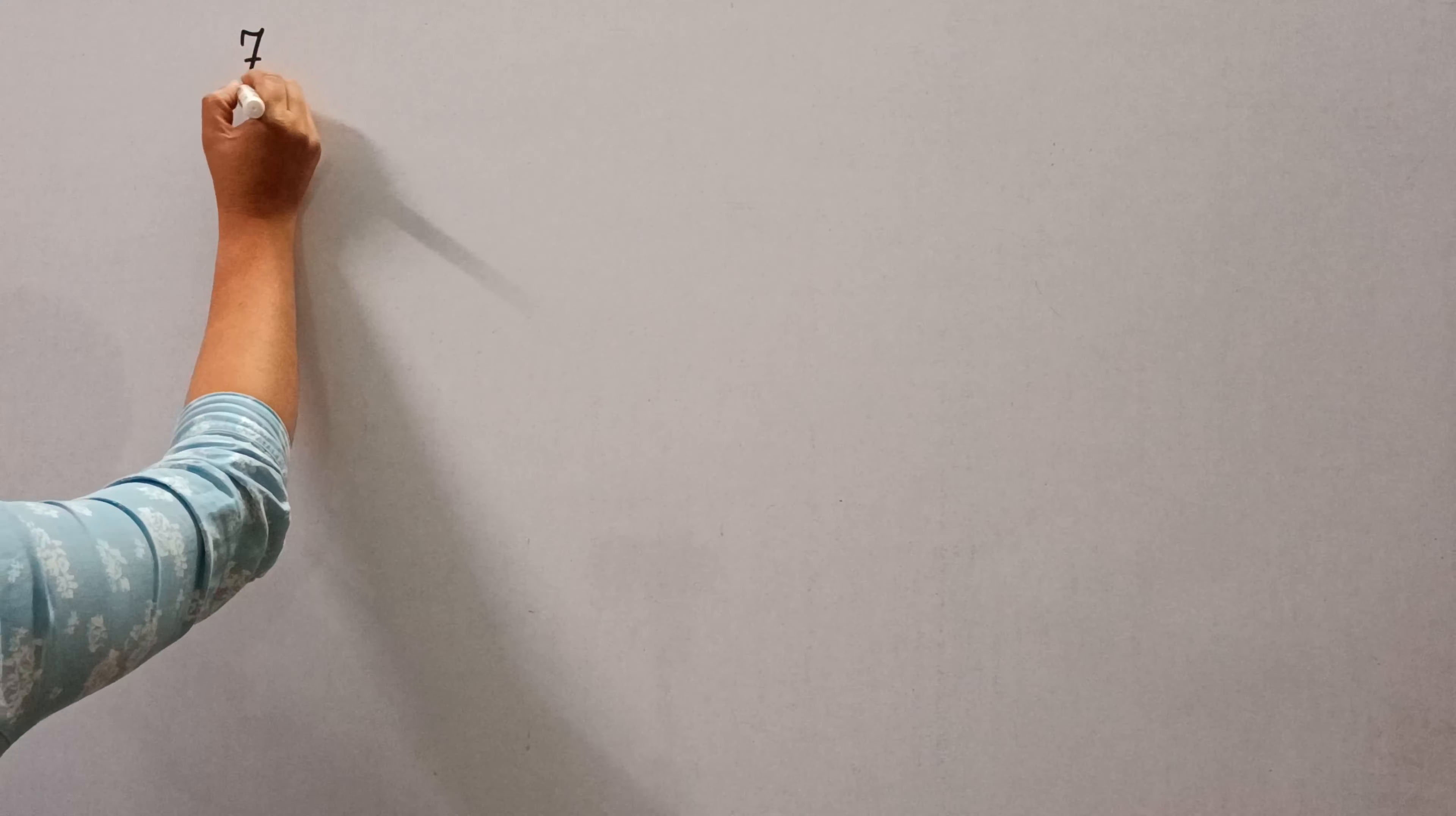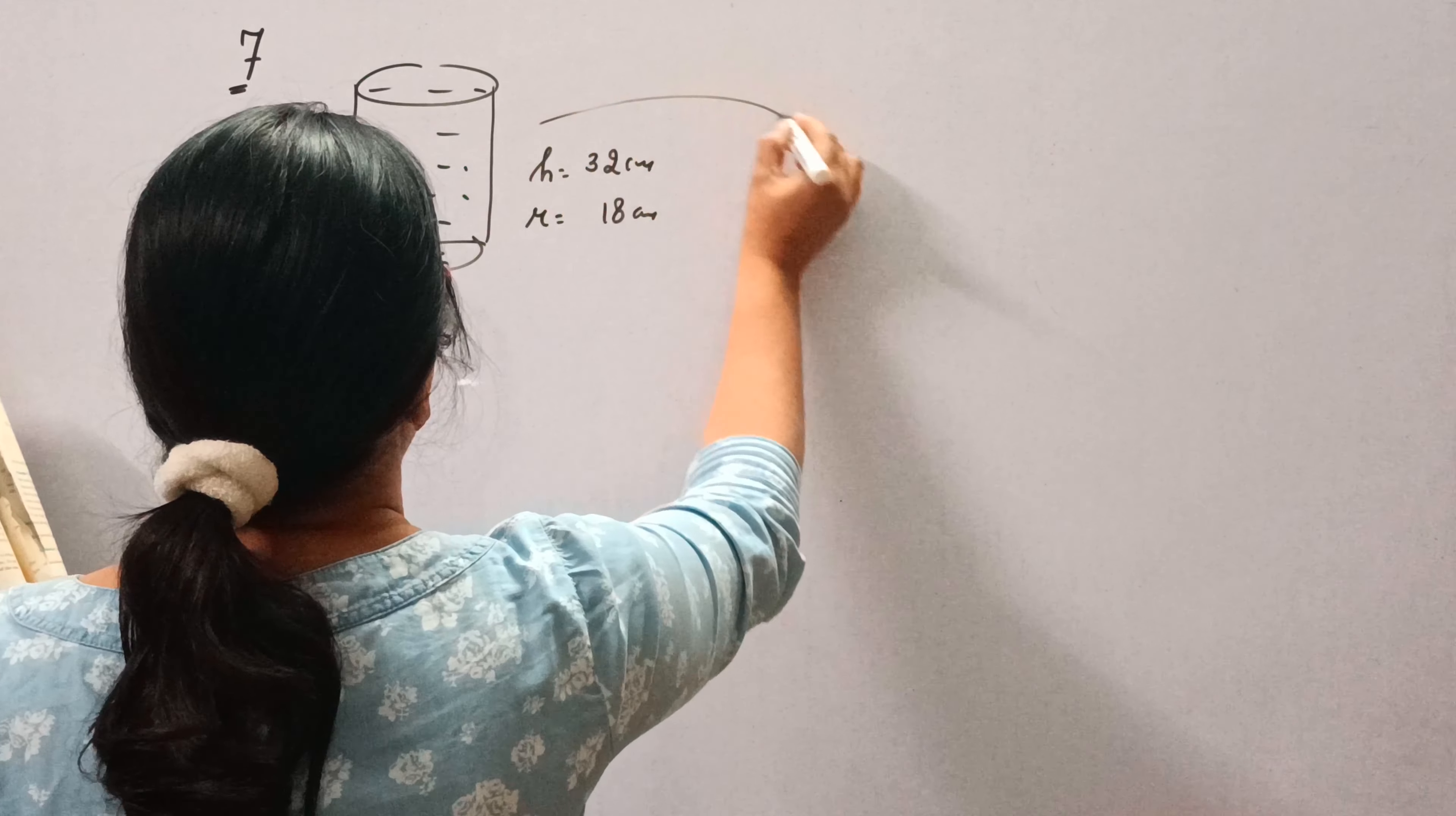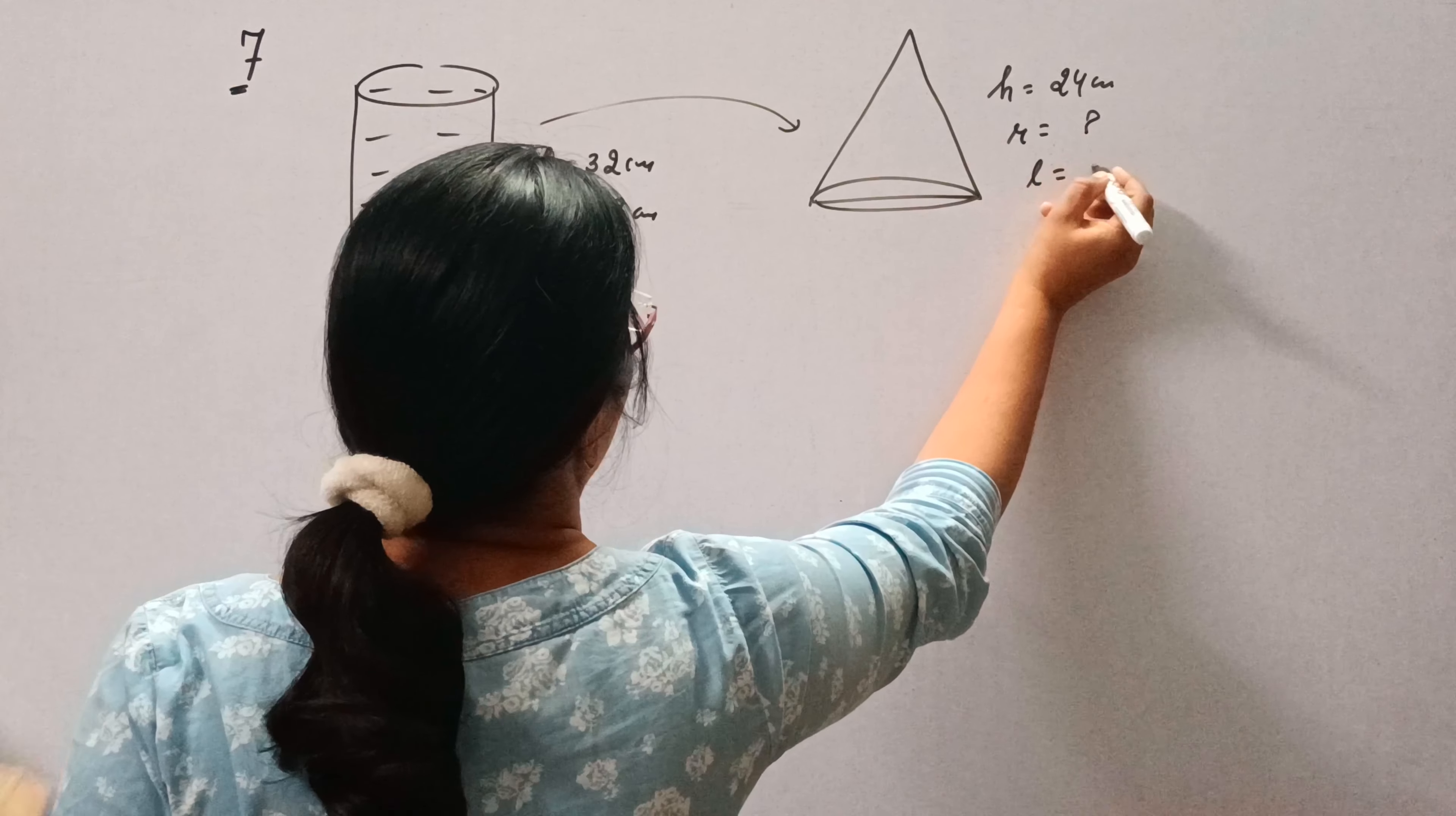Greetings everyone, today we will do question number 7 of XI 13.3. The question is: A cylindrical bucket 32 cm high with radius 18 cm is filled with sand. This bucket is emptied on the ground and a conical heap of sand is formed. If the height of the conical heap is 24 cm, find the radius and slant height of the heap.